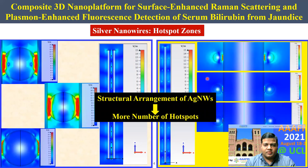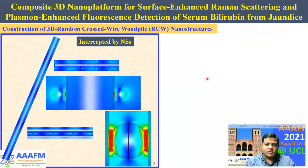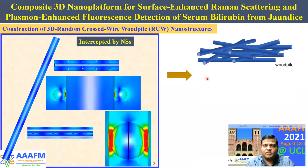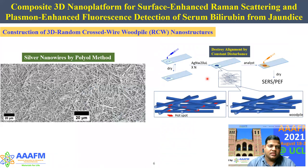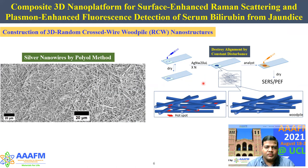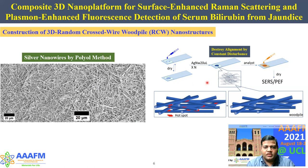This indicates that the structural arrangement of silver nanowires can lead to a greater number of hotspots. Our next target was: what if we construct a woodpile nanostructure? The construction of a 3D random crushed woodpile nanostructure can lead to the generation of more hotspots, which can be used to detect an analyte. To construct the 3D random cluster-pile nanostructures from silver nanowires, we synthesized silver nanowires by the well-known polyol method. To construct the 3D nano platform, we first sprinkled a certain amount of silver nanowires onto a glass platform and subjected it to vacuum drying, then repeated this procedure so that any alignment would be destroyed, creating a woodpile-structured silver nanowire assembly.